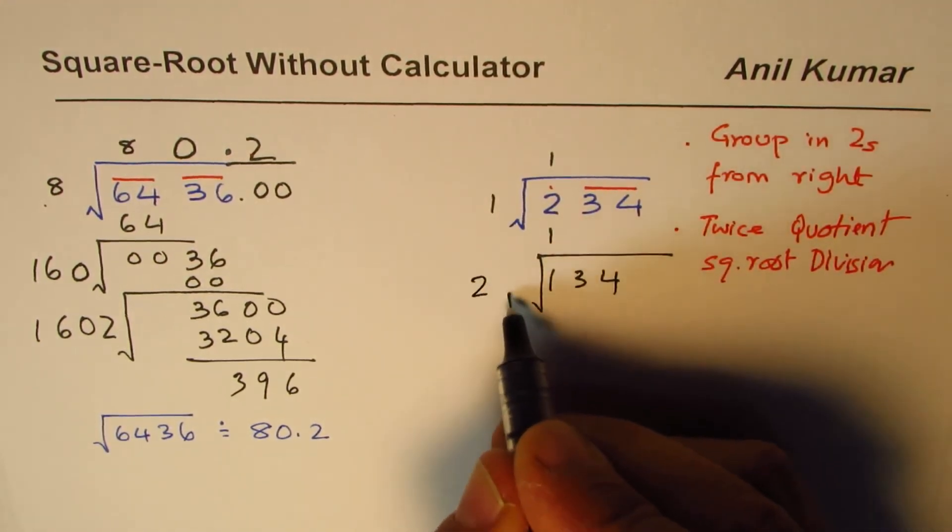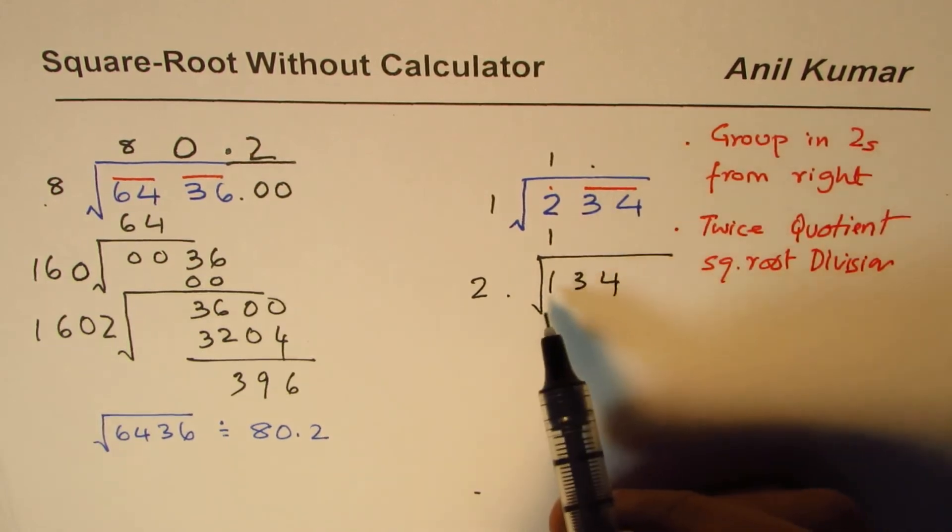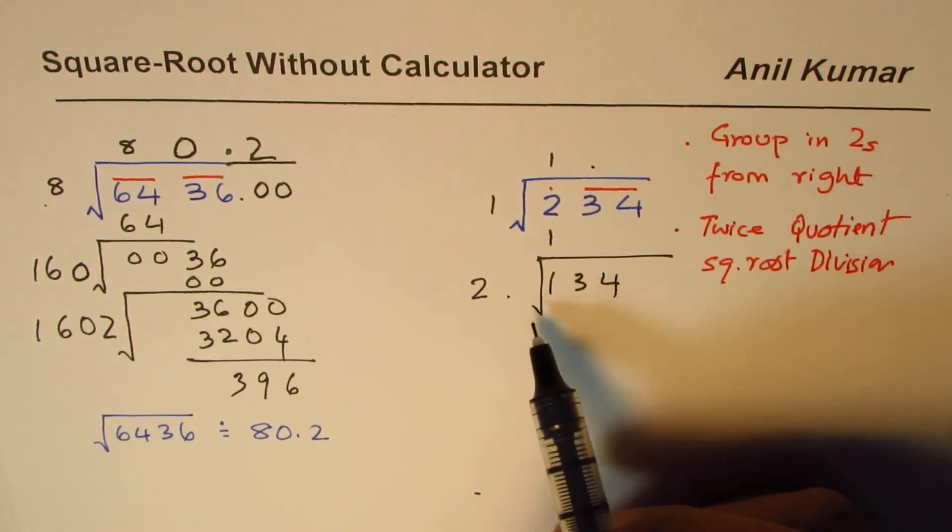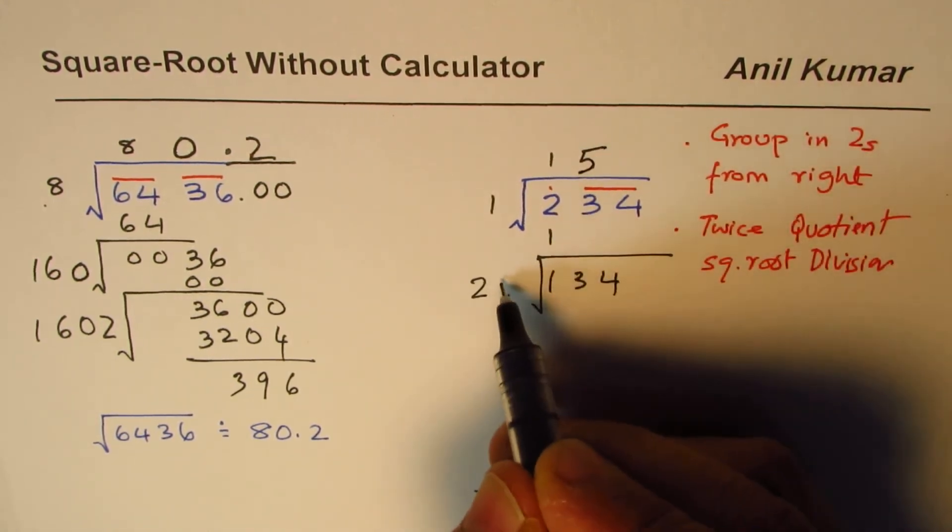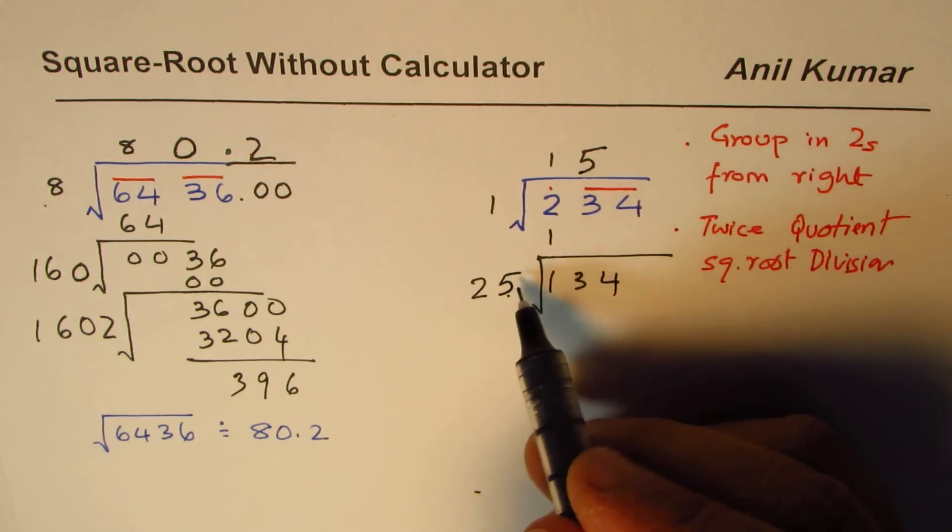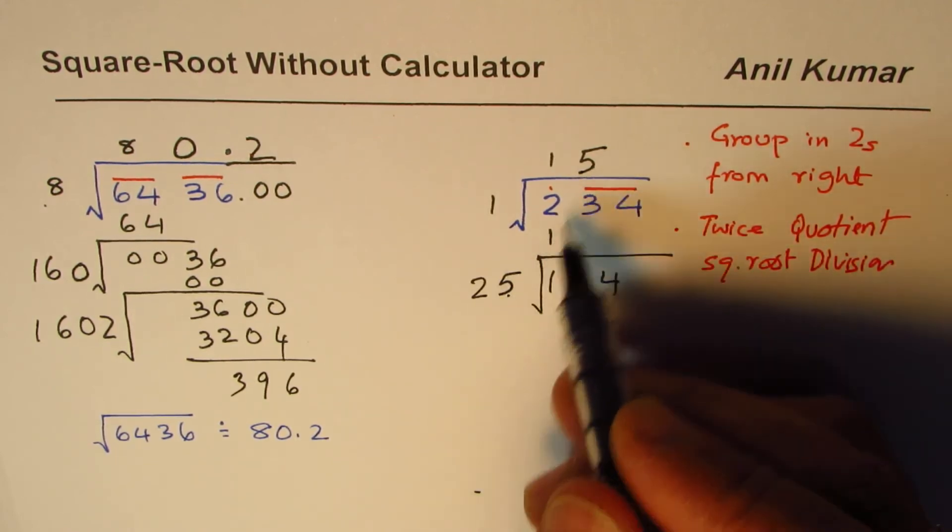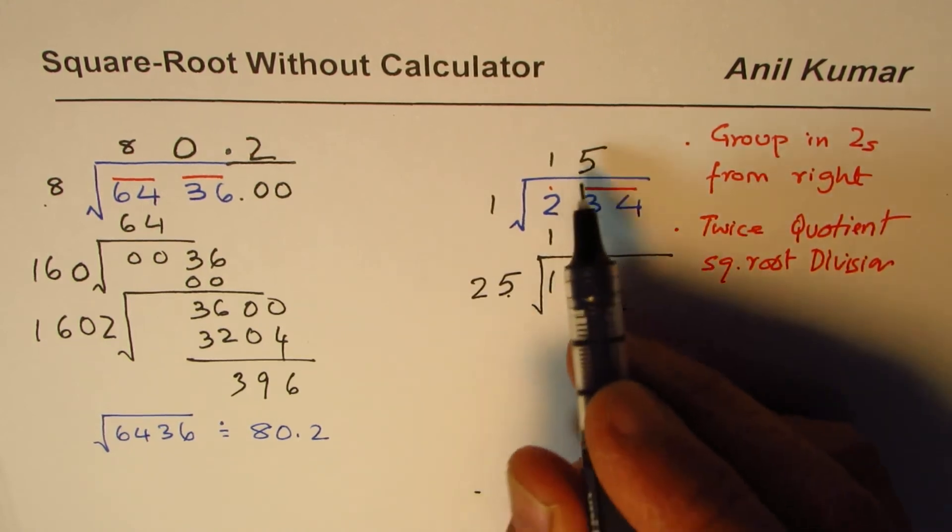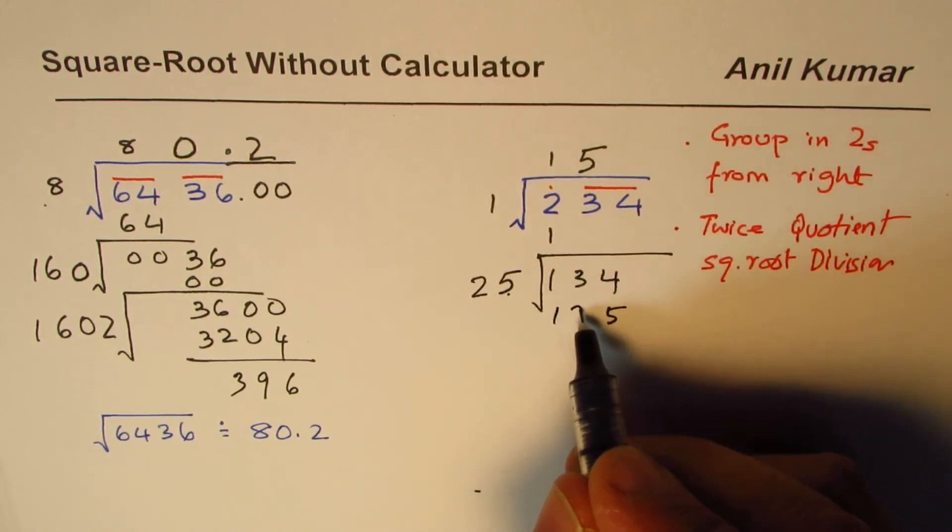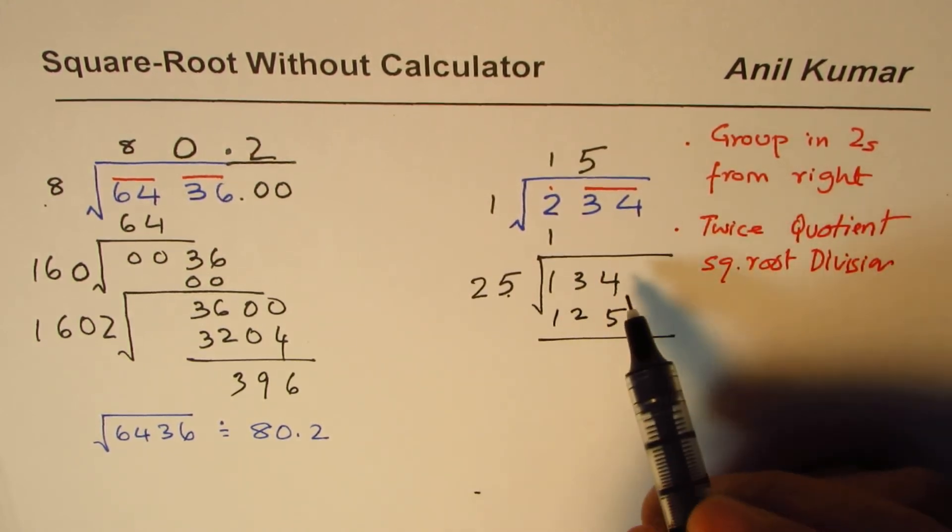Follow the square root division - that is multiply this by 2, look for a number which is the same. You could try 4, or you could also try 5. Let's try 5. We have to write 5 in both divisor and in quotient. Now multiply: 5 times 5 is 25, 5 times 2 is 10 plus 2 is 12.